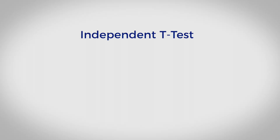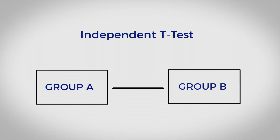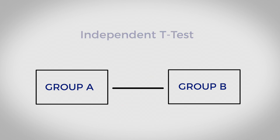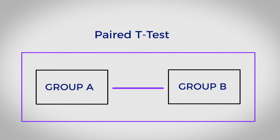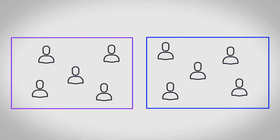An independent t-test is meant to compare the means of two groups where the samples are not related to each other, whereas a paired t-test is meant to compare the means of two groups where the samples are related to each other. This is really important because a paired t-test will actually give you more power within your analysis than an independent t-test, because you're directly comparing across one sample instead of comparing the means of one group versus the means of another group.